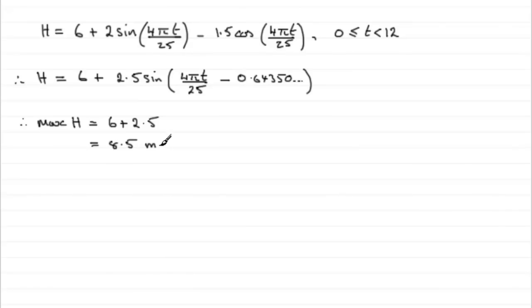Okay, well, with that, we now have got to find out the value of t that gave us that maximum. And we know that this value in the brackets here must be pi upon 2 to achieve that. The sine of pi upon 2 gives us 1. That maximises this part of the equation. So let's start then by saying that 4 pi t over 25 minus the 0.64350 and so on equals pi upon 2.